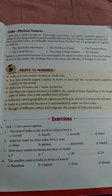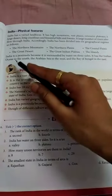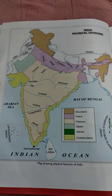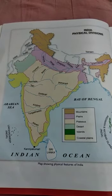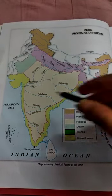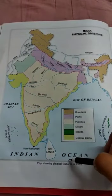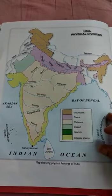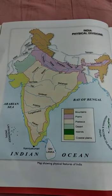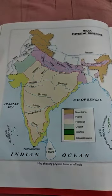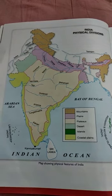India is a peninsula because it is surrounded by water on three sides. It has the Indian Ocean in the south, the Arabian Sea in the west, and the Bay of Bengal in the east. Through this map you can easily see the Arabian Sea in the west, the Bay of Bengal in the east, and the Indian Ocean in the south. We will learn about each geographical region in the upcoming chapters.